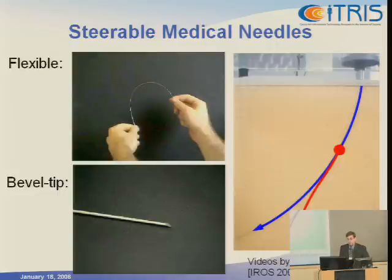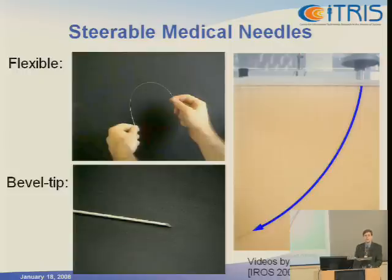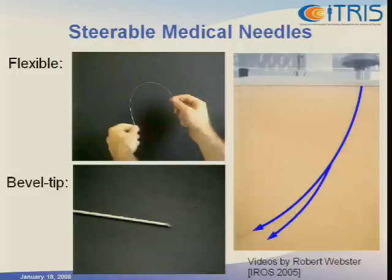Planning for these paths is difficult. One of the main reasons is that bevel tip needles are highly sensitive to inhomogeneities in the tissue at the needle tip, which can cause the forces at the needle tip to vary. So even though we would ideally like it to follow constant curvature paths, inhomogeneous tissue will cause deflections and the needle will follow a path that's somewhat different from the expected path. We'd like computational algorithms that consider this type of deflection at the planning stage.